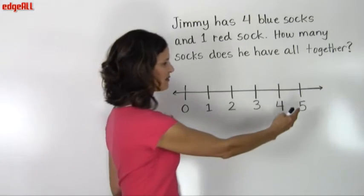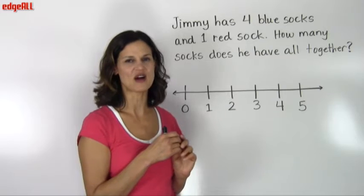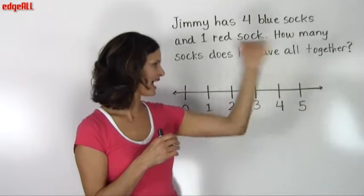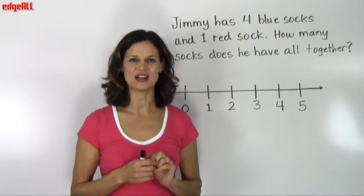This is just one part of the number line, the numbers between 0 and 5. But we could continue to make our numbers all the way up as the numbers get bigger and bigger.